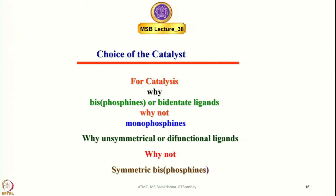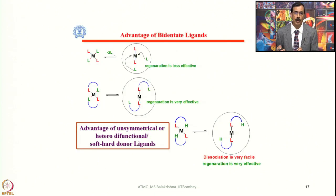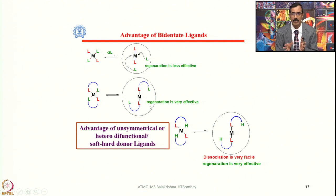I was telling you about the choice of catalyst and for catalysis why we prefer bidentate ligands. Even when you have bidentate ligands, why we prefer unsymmetrical bidentate ligands or difunctional ligands having hemilabile nature or of hybrid nature. Now I shall try to convince you using the following cartoons why bidentate ligands are much more efficient, have longer life, and can yield products with high turnover number and turnover frequency.